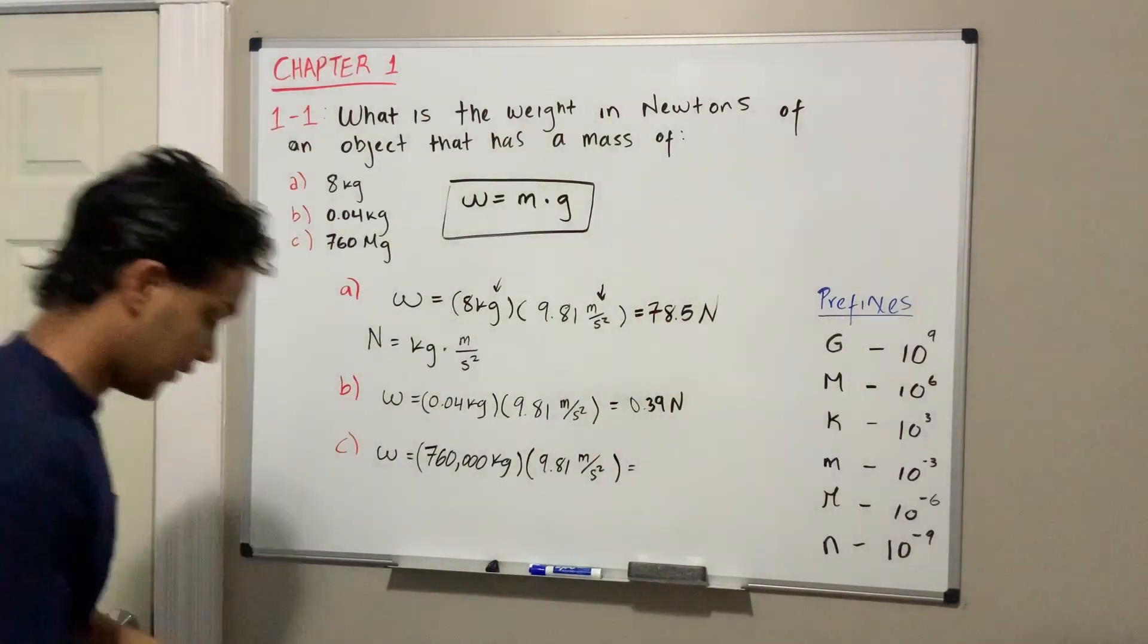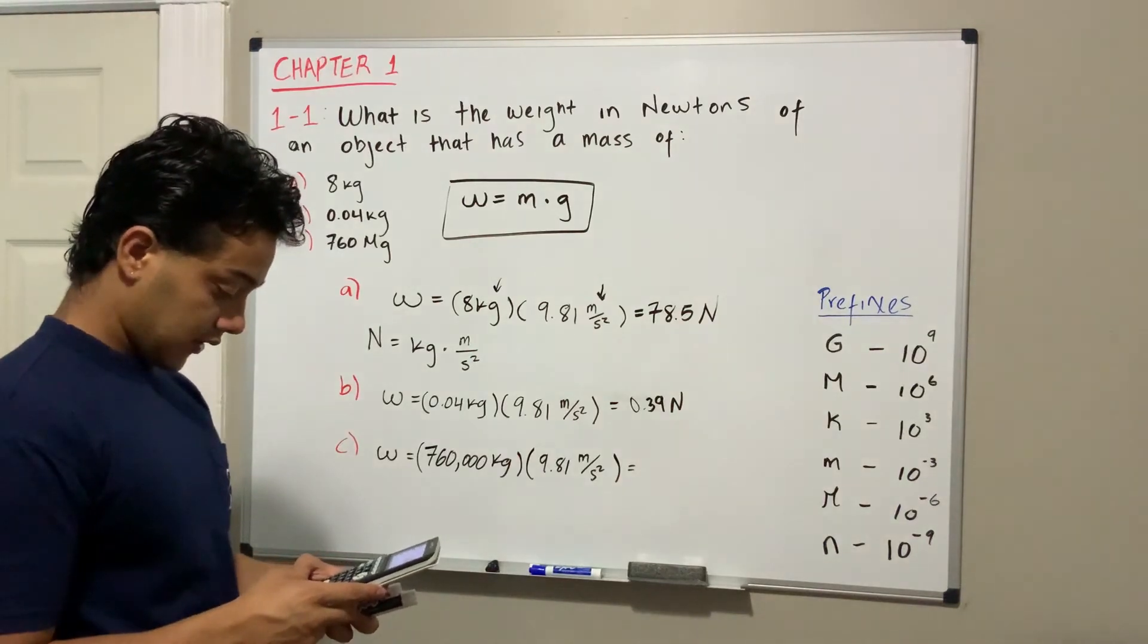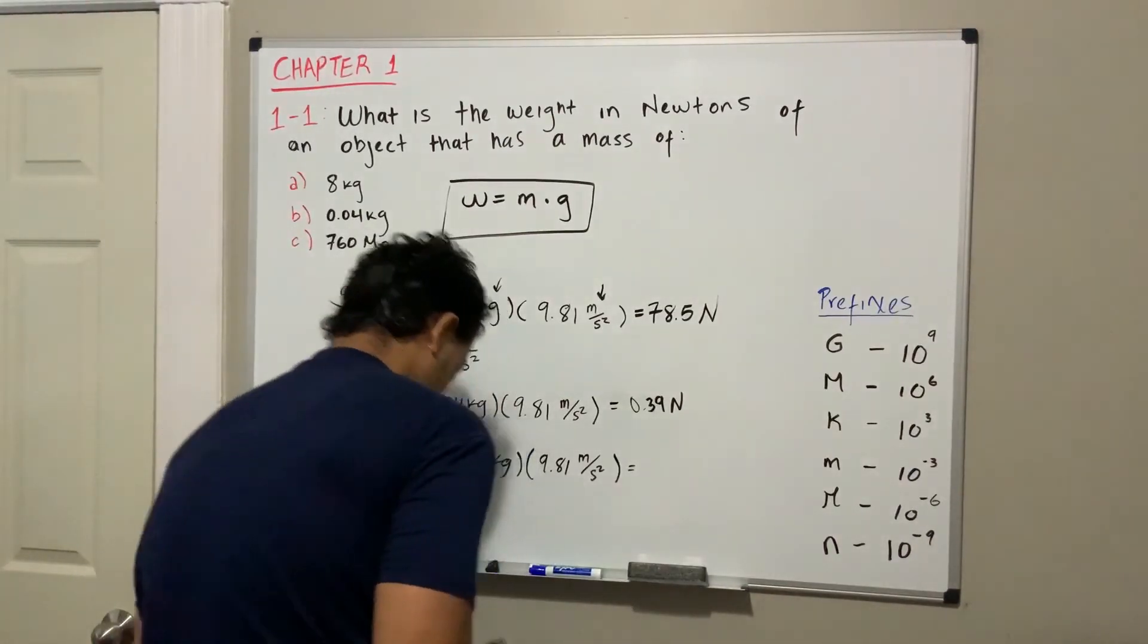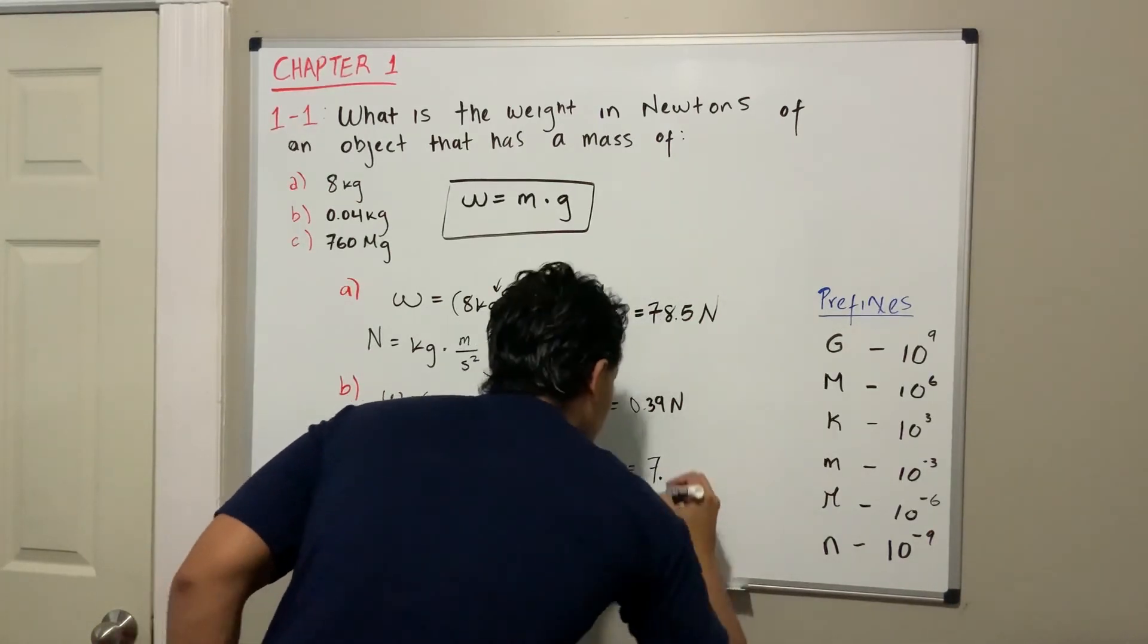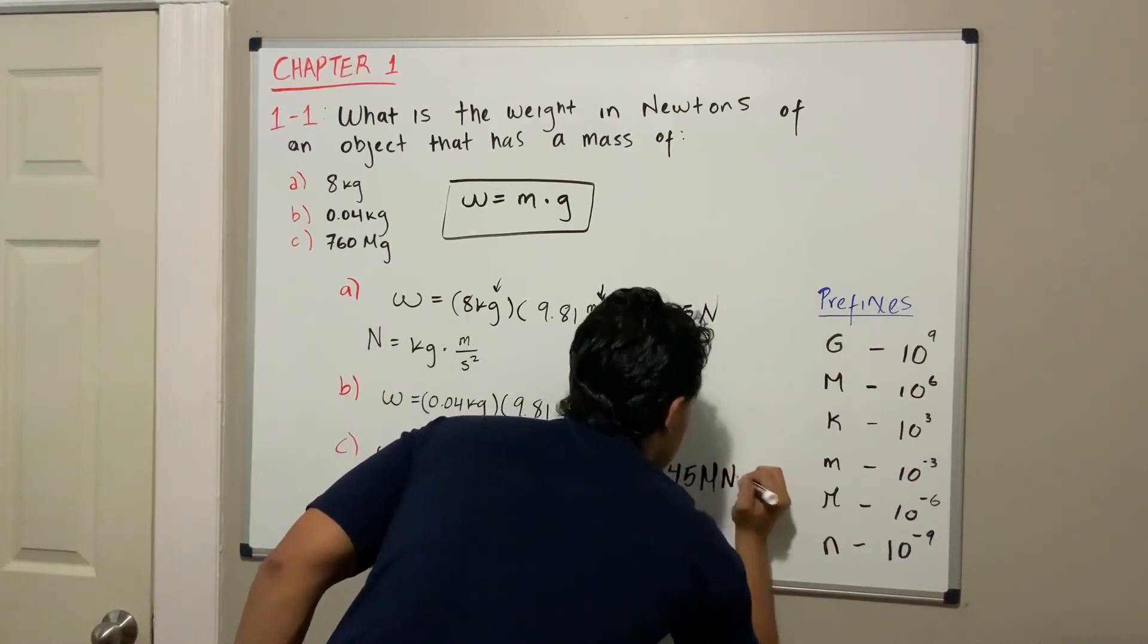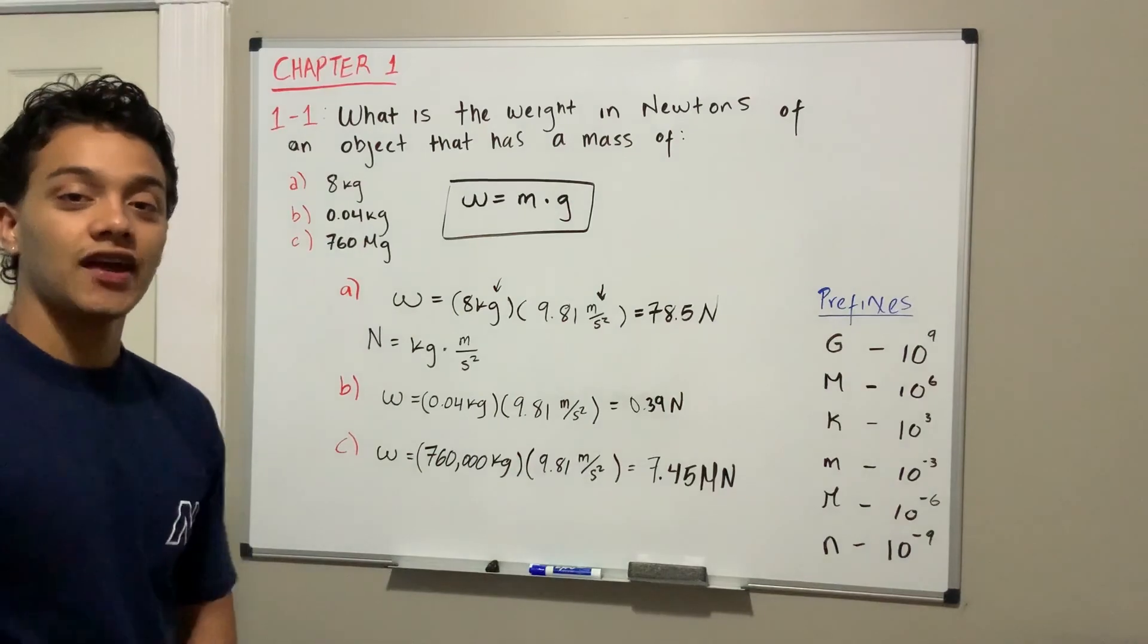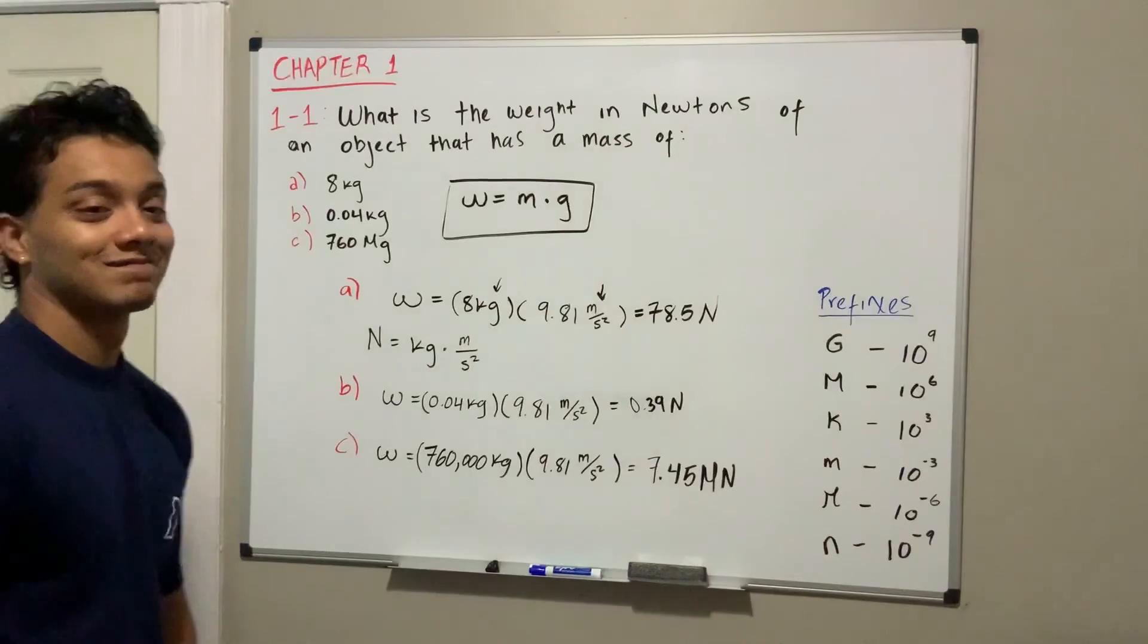Using our calculator, we get a big number. We get 7.45 mega newtons, which means mega means times 10 to the positive 6. And that's all for today. This is going to be our first question. Thank you guys.